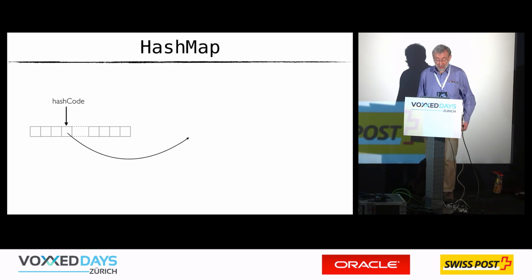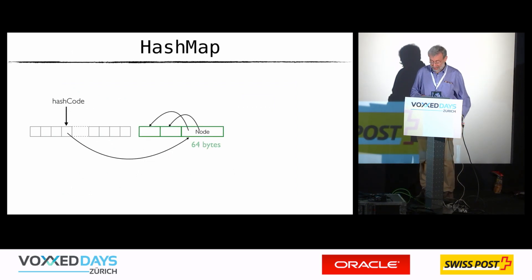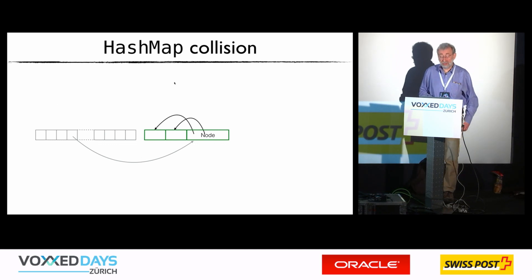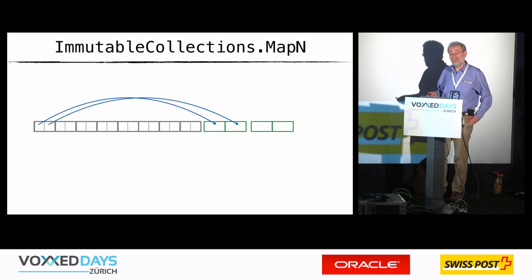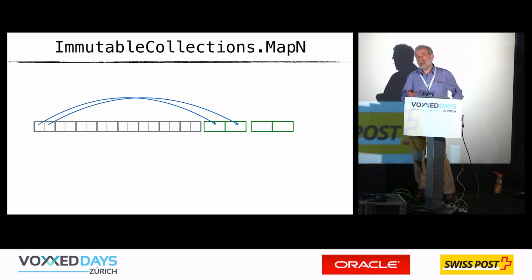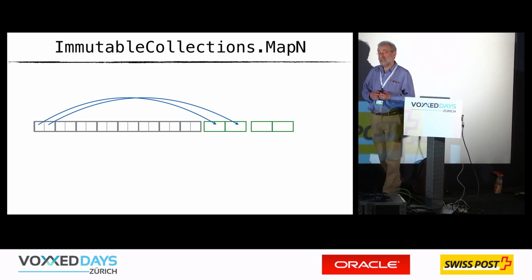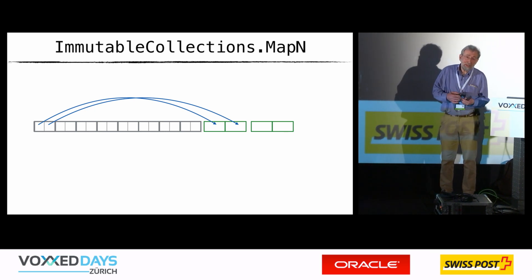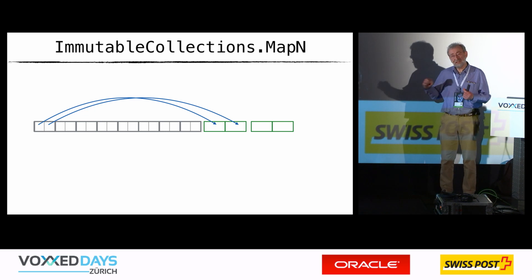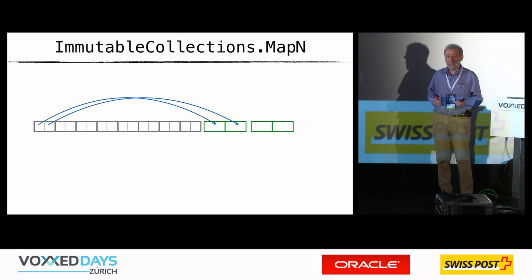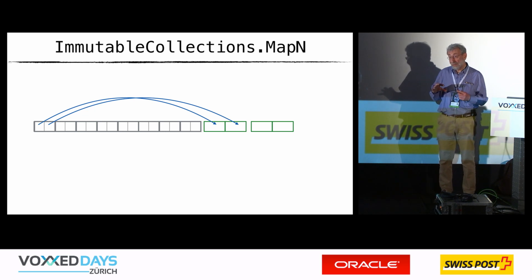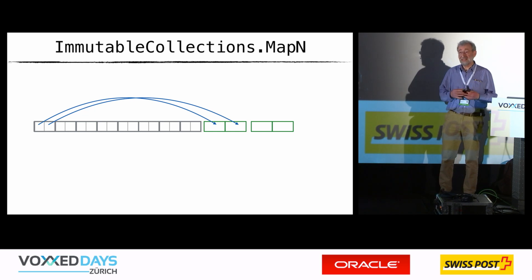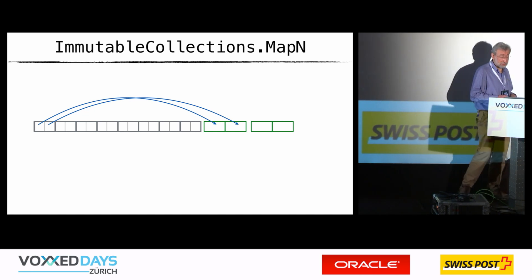I'll skip the hash map details except to say that what people think is the problem with hash maps is overflow — if you get collisions in a hash map, you get overflow on the bucket chain, and you're effectively reduced to some linked data structure. It used to lead to a linked list structure; in Java 8 onwards it leads to a binary tree. But they're still linked structures, and linked structures are the thing that really causes problems with hash maps.